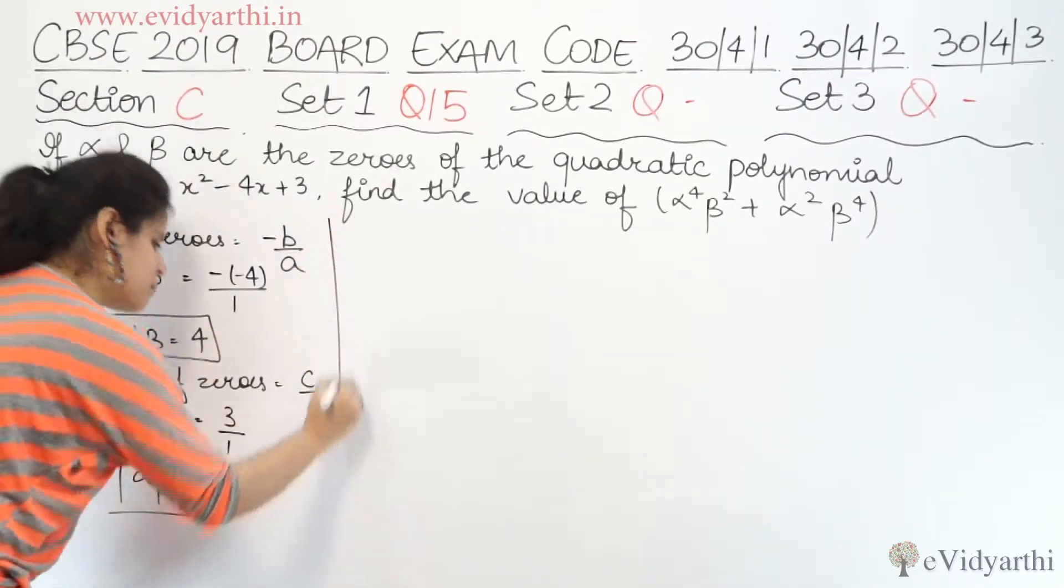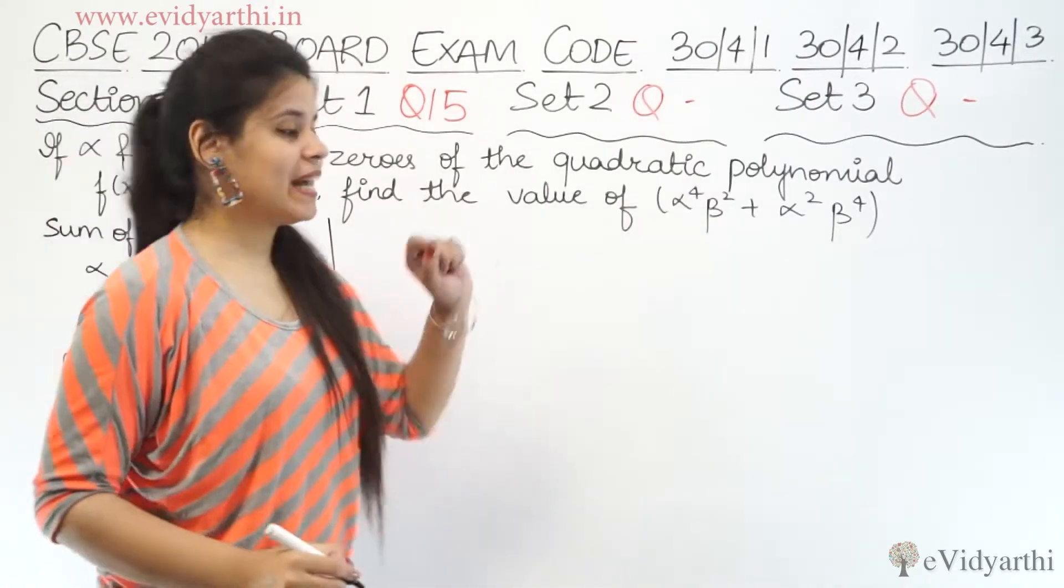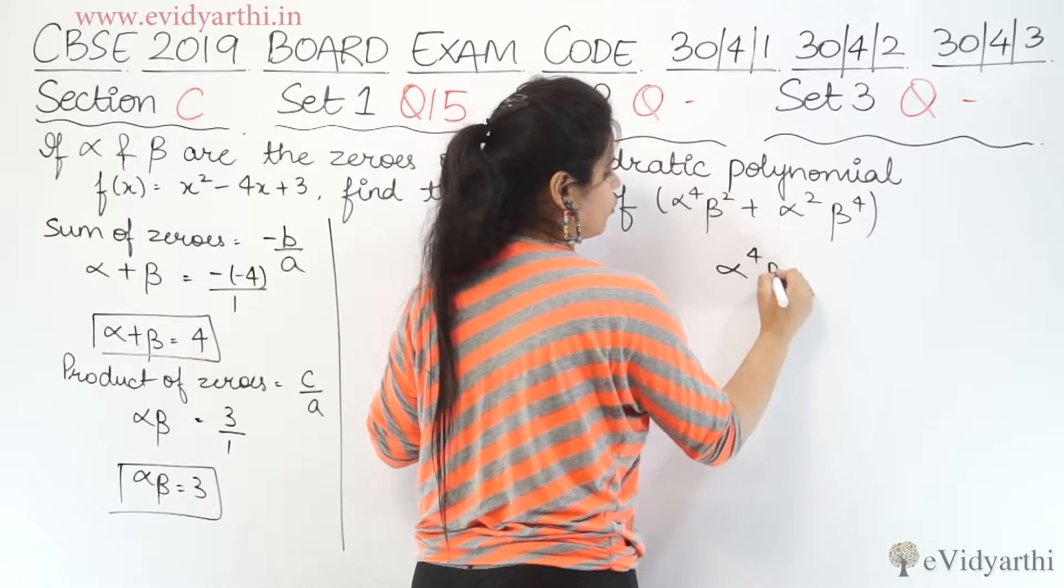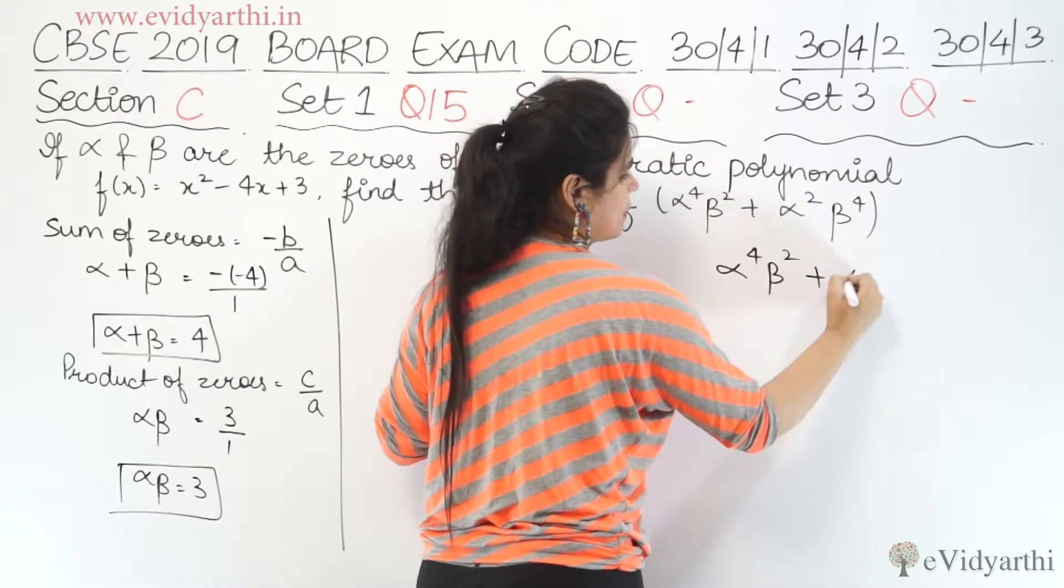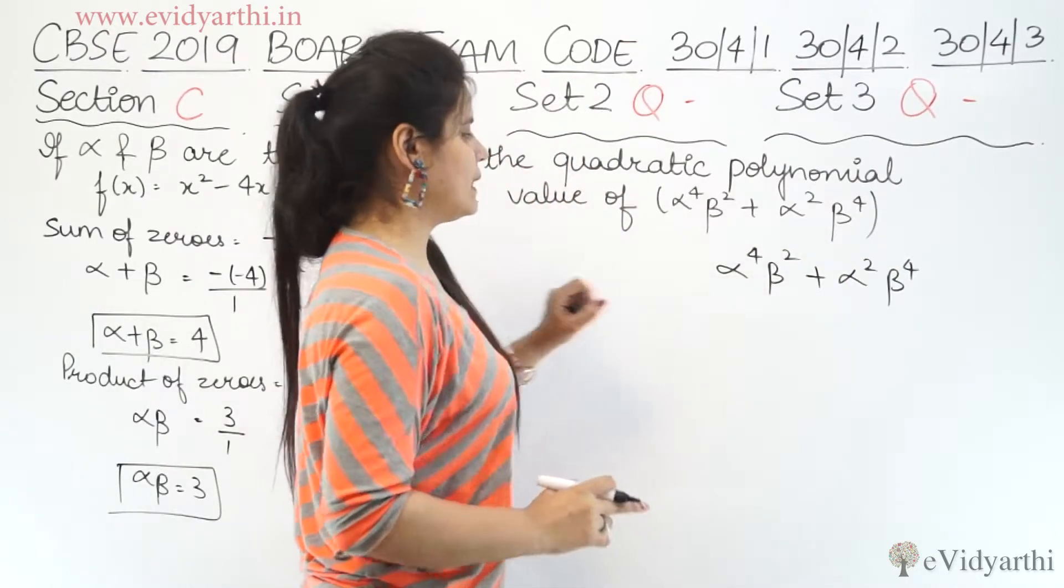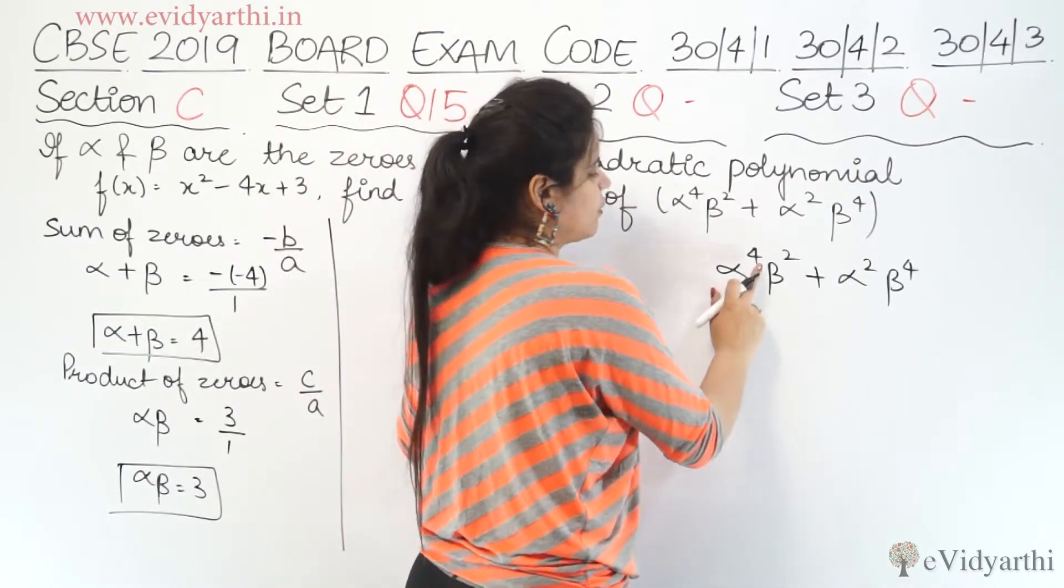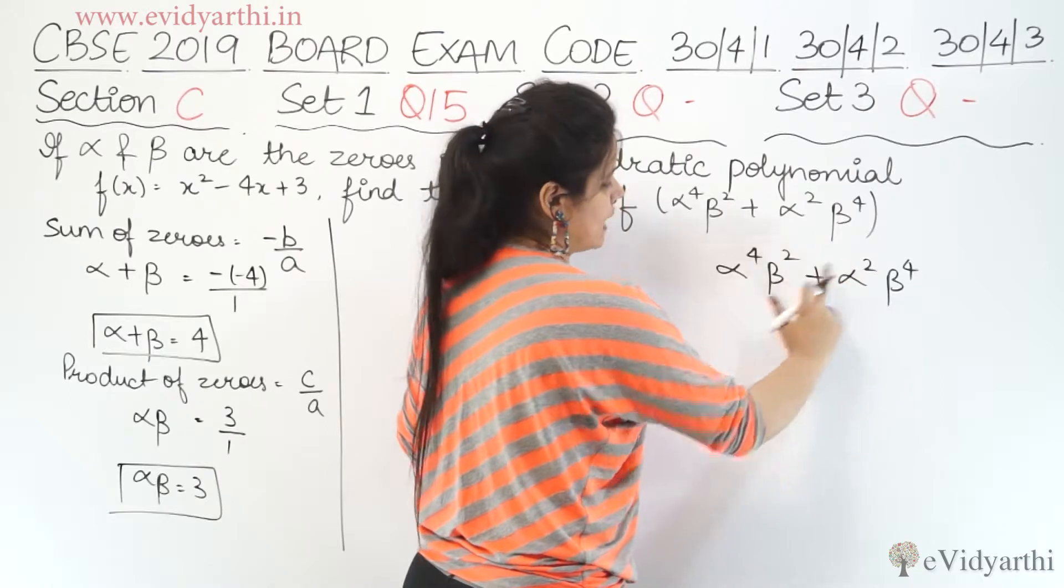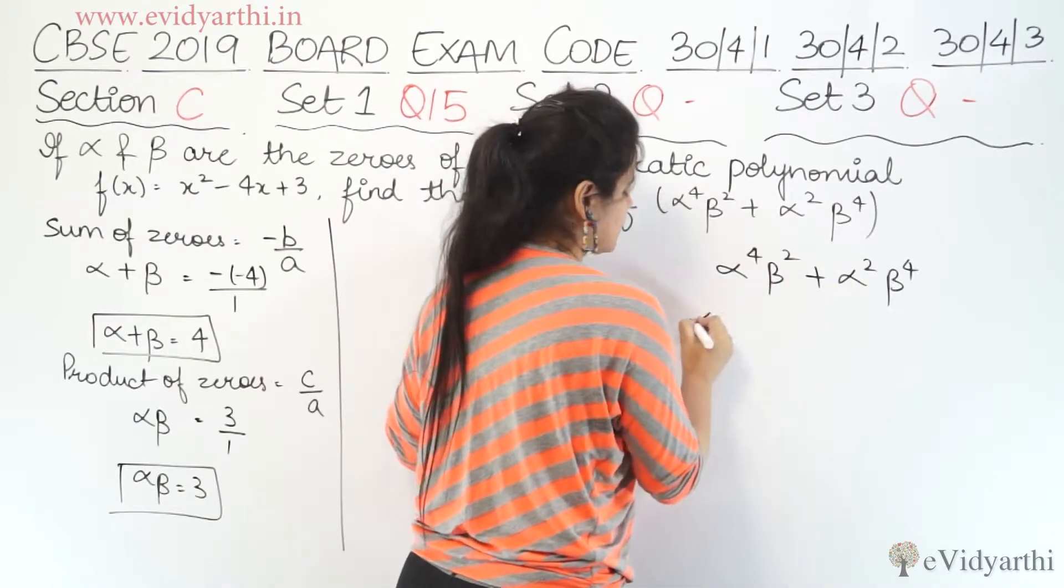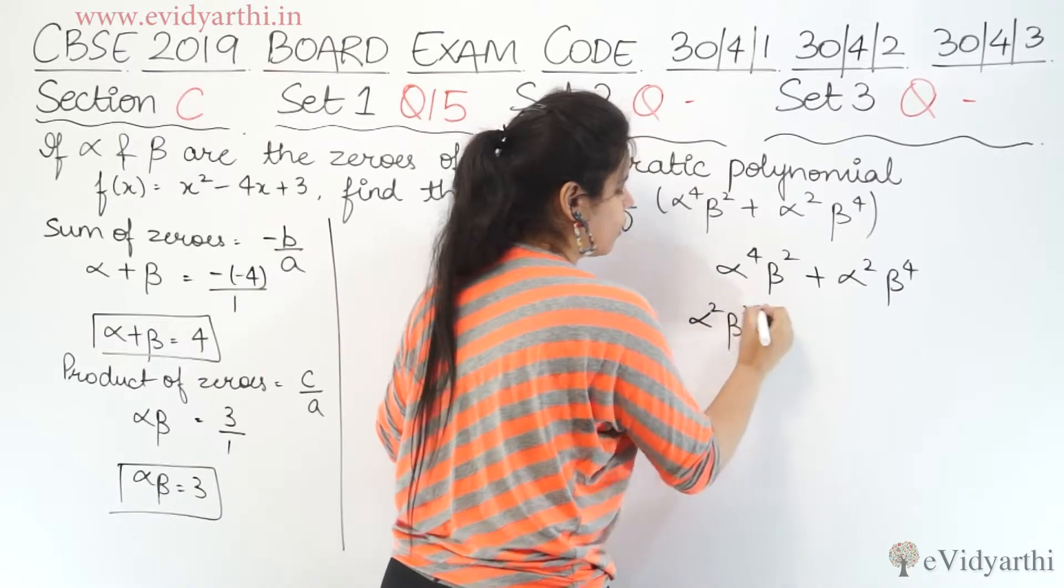Now let's find, we have to find α⁴β² + α²β⁴. Now this can be taken common. Here alpha 4 times, beta 2 times, and here alpha 2 times, beta 4 times. So here alpha square and beta square are common.